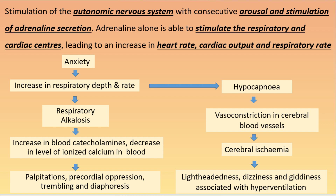In the flowchart: anxiety causes increased respiratory depth and rate due to increased adrenaline secretion. This causes respiratory alkalosis, because faster breathing flushes out more carbon dioxide, leading to increased blood catecholamines and decreased ionized calcium — resulting in palpitations, precordial oppression (a squeezing pain in the front of the chest), trembling, and diaphoresis (increased sweating). Additionally, hypocapnia causes vasoconstriction in cerebral blood vessels, leading to cerebral ischemia, which produces lightheadedness, dizziness, and giddiness.